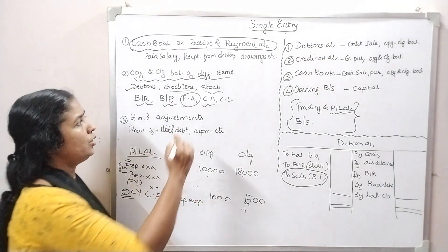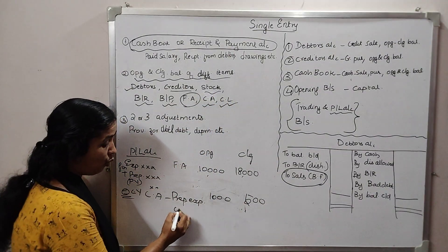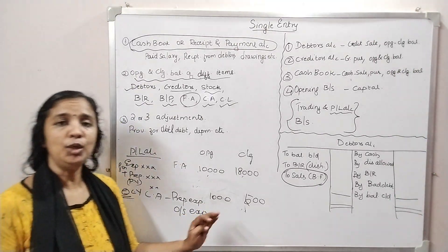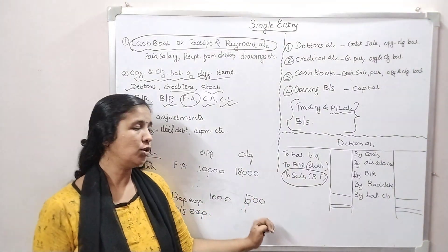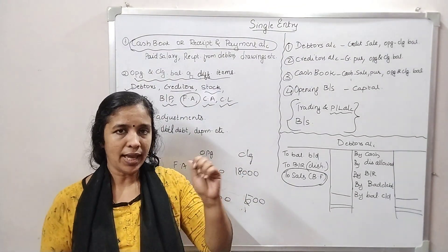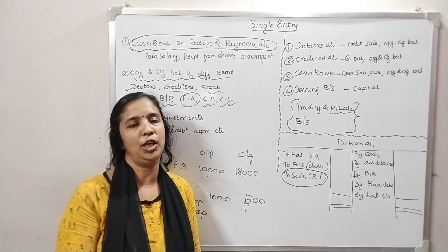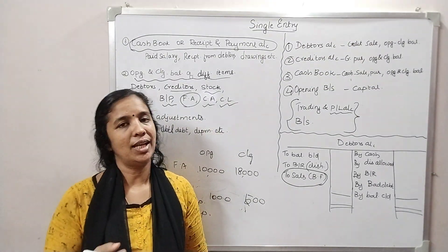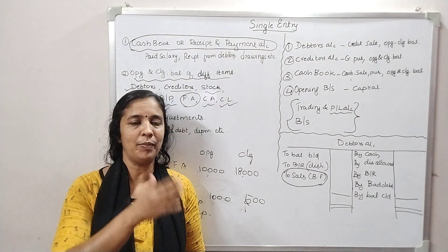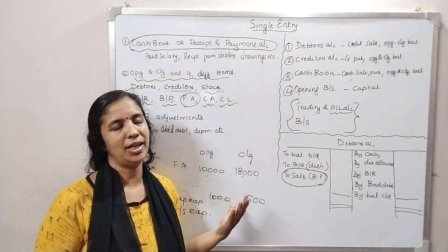The current liability includes outstanding expenses. The current liability has opening and closing expenses. In the profit and loss account, for outstanding expenses, we add the previous year outstanding and the current year amount. If you prepare a balance sheet, we prepare a separate account.